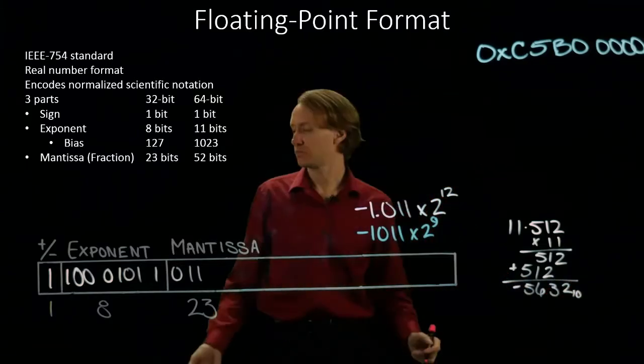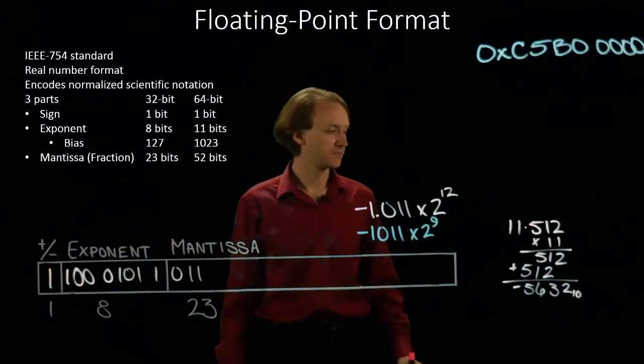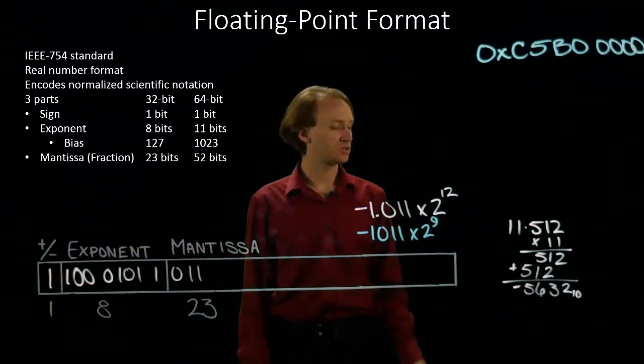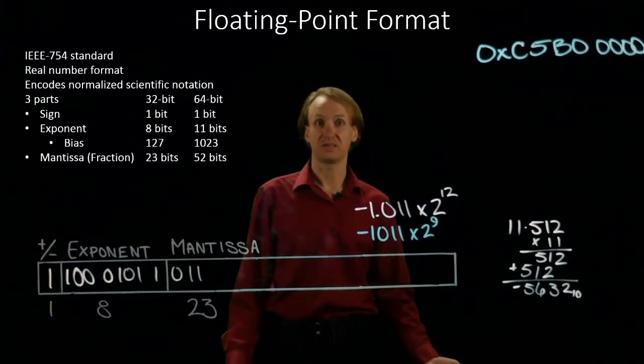And this is a negative number because we have one for our sign bit. This floating point number corresponds to negative 5,632 in decimal.